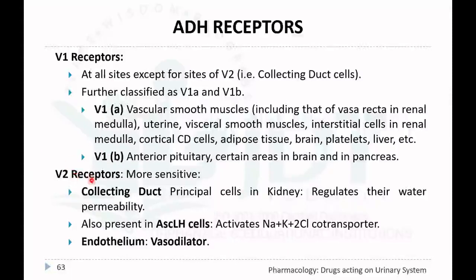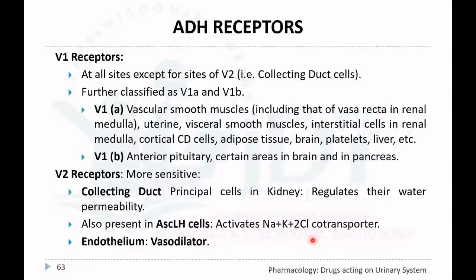V2 receptors are more sensitive and are present in the collecting duct in the nephron, specifically in the principal cells of the kidney, where they regulate water permeability. They are also present in the ascending loop of Henle cells, where they activate the Na+/K+/2Cl- co-transporter. V2 receptors are also present in endothelial cells, where they cause vasodilation.